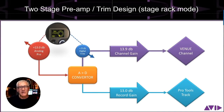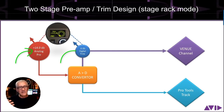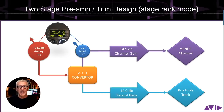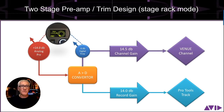Let's take a look at what happens when we turn our input gain past that 1 dB step of the analog pre and see how the whole thing reacts. Let's say we're in stage rack mode and we turn this up to 14.5 dB. That translates into 14 dB of analog pre — we've moved past a step — and then 0.6 dB of digital trim. So 13.9 plus 0.6 equals a new total gain of 14.5 dB for our channel strip, and our record gain increases by 1 dB as well.